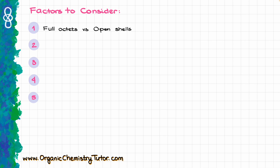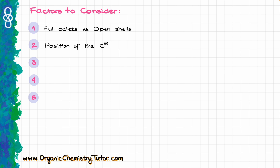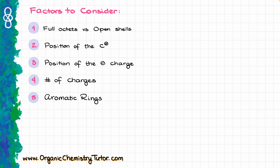The first one is the presence of full octets, or we are going to look at possible open shells — atoms that contain only six electrons on the outermost shell, like boron or carbocations. Then we'll pay attention to the position of carbocations if we have any, the position of the negative charge, the number of charges in our molecule, and finally the aromatic rings, if they are present.